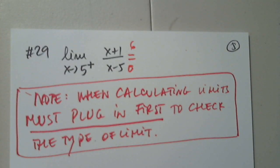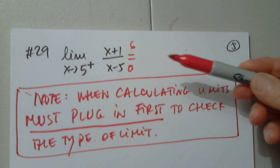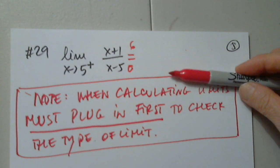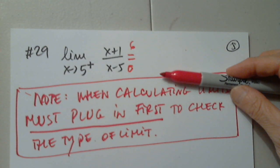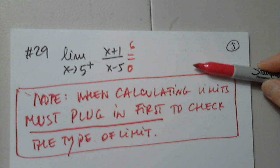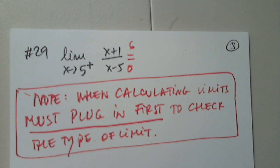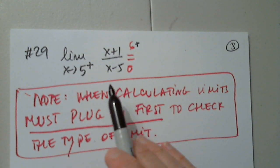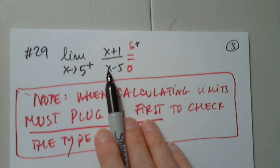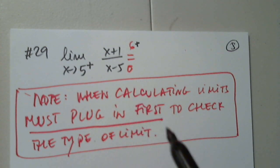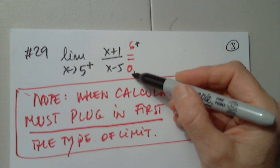Now think in terms of 5 from the right. Can you give me a number from the right-hand side of 5, very close to 5? Don't say 7, don't say 6, don't say 5.5 — those are very far away from 5. Tell me a number very close to 5 from the right. 5.001. Perfect. The numerator stays positive. When you plug in 5.001 into the denominator, I just need the sign — positive 0.001.